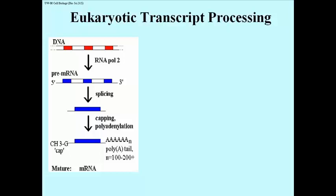In the DNA, the red blocks are the regions which actually encode — contain the codons for a polypeptide. Therefore in the transcript, those are the blue blocks. Splicing is getting rid of the white blocks, which don't code for anything, and connecting in correct order the blue blocks, so you end up with a messenger RNA that has the coding sequence for a polypeptide contiguous from one end to the other.